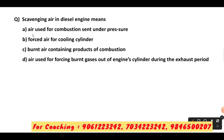Option A is air used for combustion sent under pressure. Another option is forced air for cooling the cylinder. Another is burnt air containing products of combustion. The correct answer is option D: air used for forcing the burnt gas out of the engine cylinder during the exhaust period, as discussed in the theory videos.